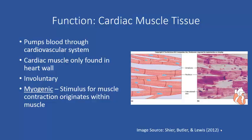In terms of function, one difference between cardiac and skeletal muscle tissue is that unlike skeletal muscle, which contracts when it receives a stimulus from the nervous system, cardiac muscle tissue is involuntary. Involuntary means it requires no external stimulus and is not under conscious control. Cardiac muscle tissue is specifically referred to as myogenic because the stimulus for contraction originates within the muscle itself.